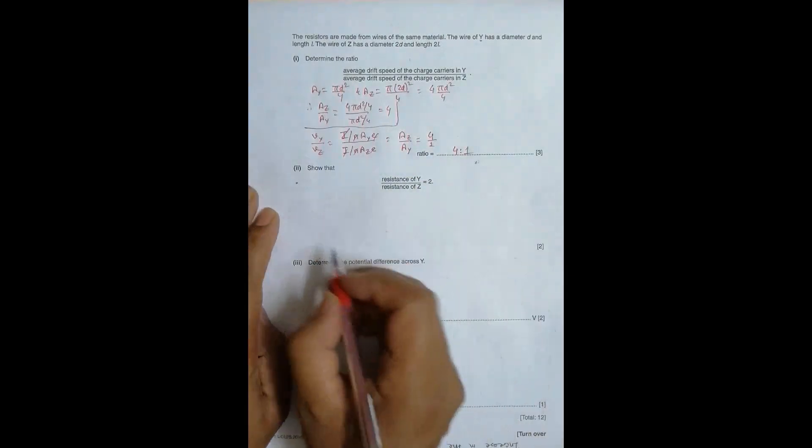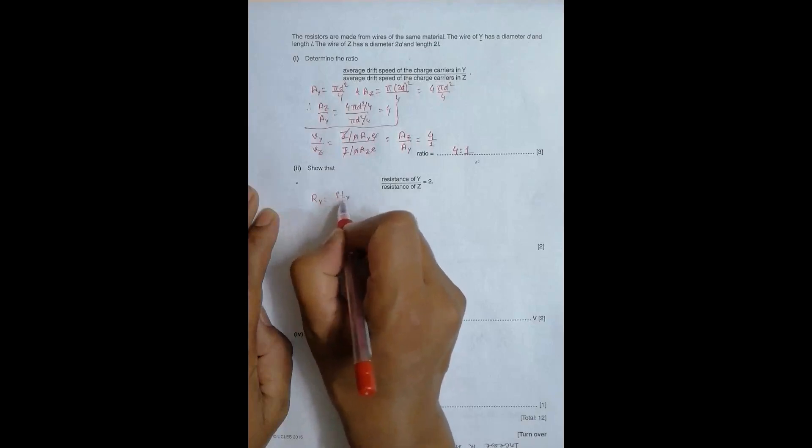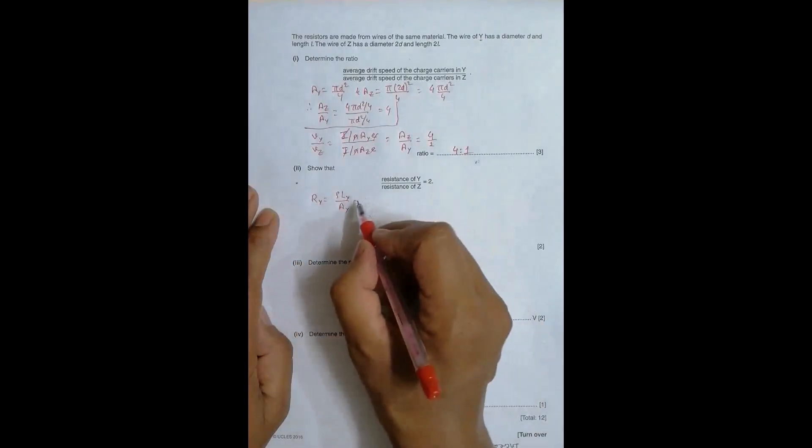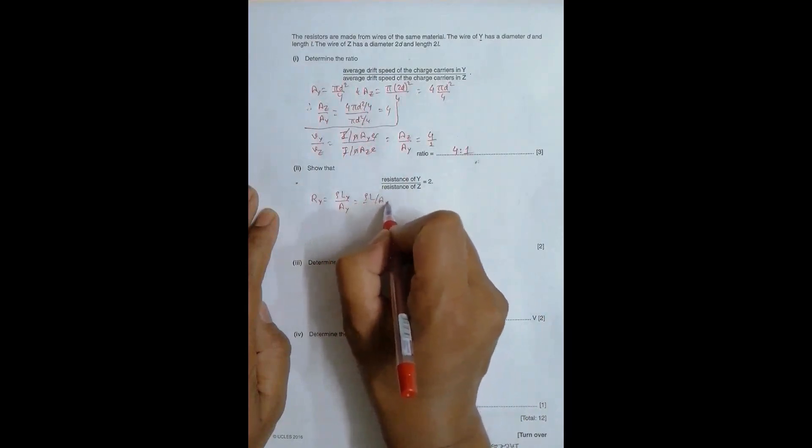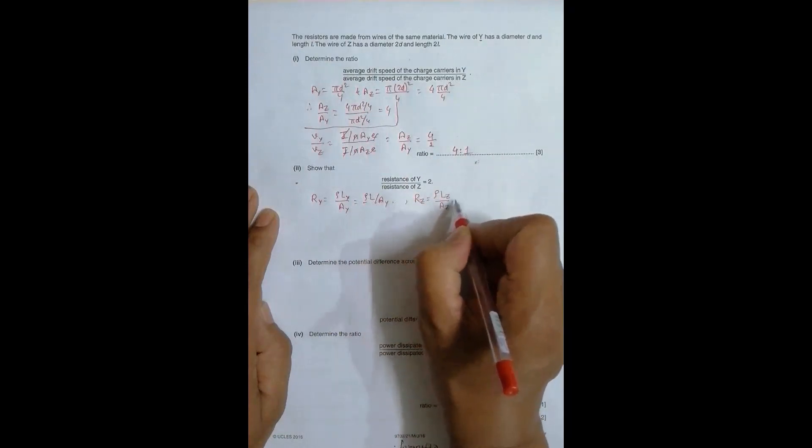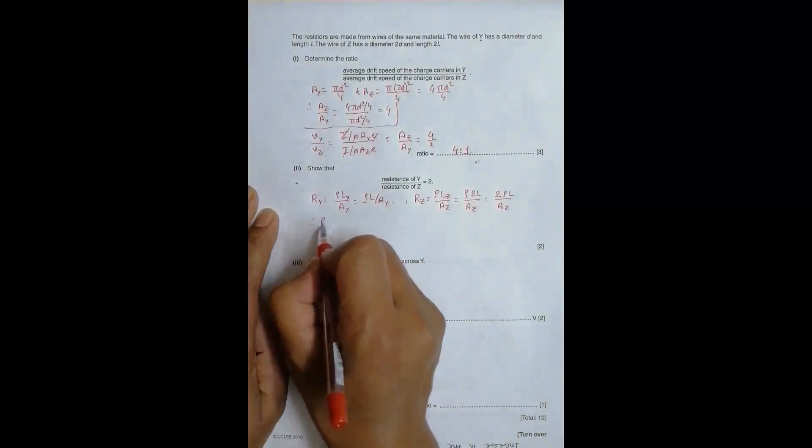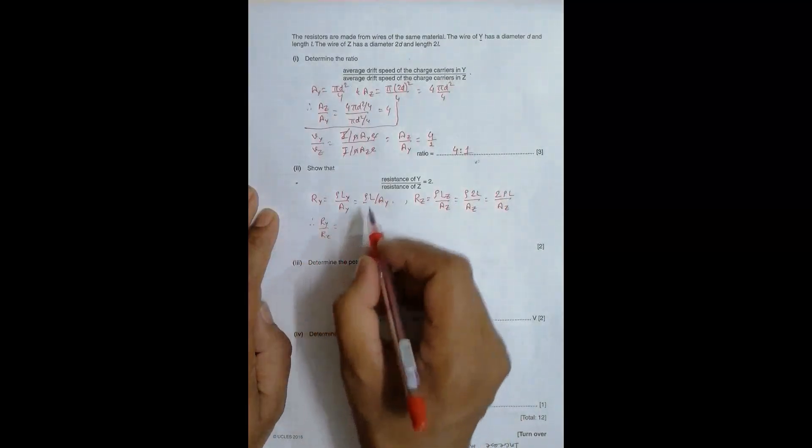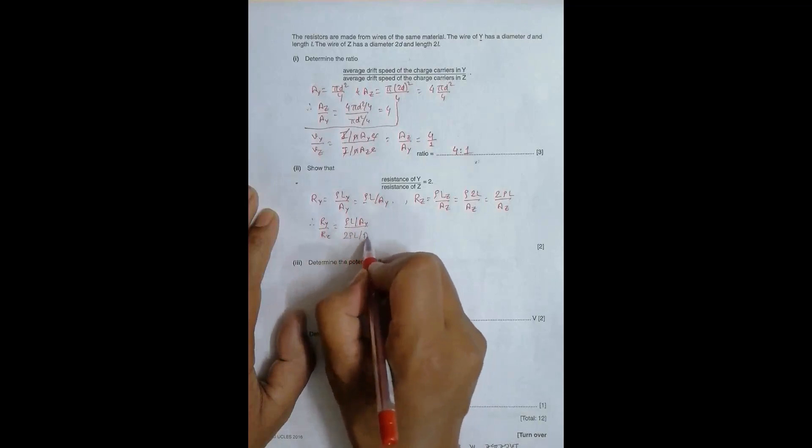Now, for resistance, resistance Y is equal to rho L_Y by A_Y. And this L_Y is equal to, length of Y is simply L, rho L by A_Y. And the resistance of Z is equal to rho L_Z by A_Z. That's equal to rho L_Z is equal to twice L, twice L by A_Z equal to 2 rho L by A_Z.